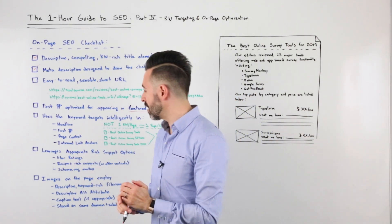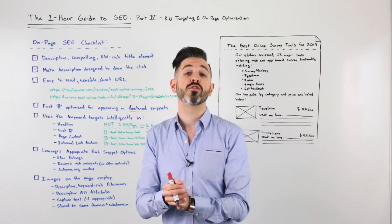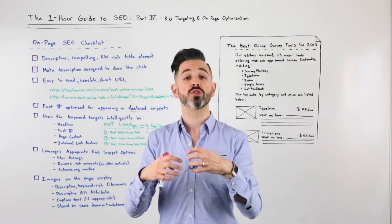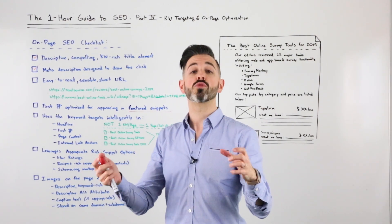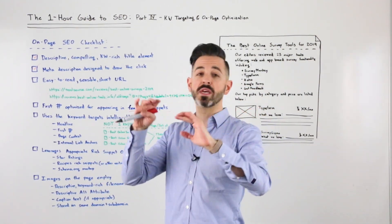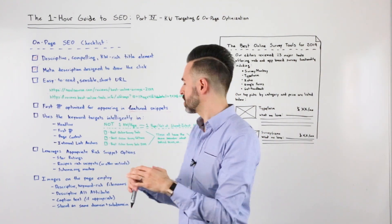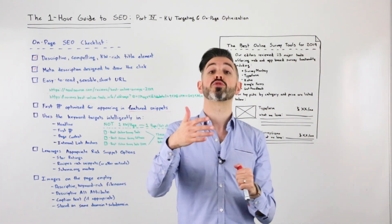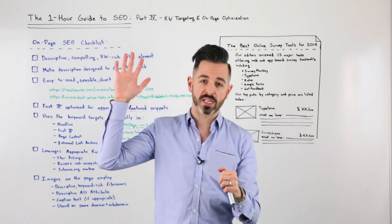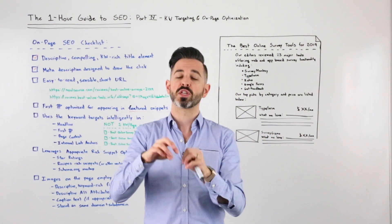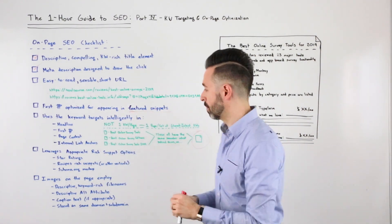Next, leverage appropriate rich snippet options. For example, if you're in the recipes space, you can use Schema markup for recipes to show Google you've got a picture, cooking time, and other details. Google offers this in a wide variety of categories — reviews get star ratings, and so on. Schema.org has a full list and Google's rich snippets markup page offers more resources as well.